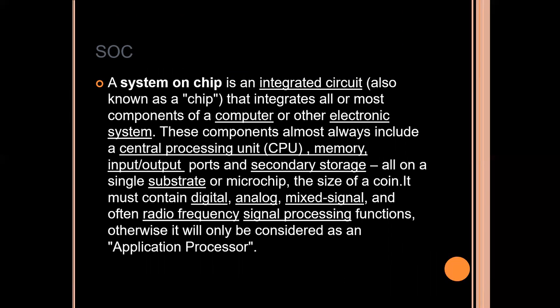Let's deep dive into the definition of SoC. A system on a chip is an integrated circuit, also known as a chip, that integrates almost all components of a computer or other electronic devices. These components almost always include a central processing unit (CPU), memory, input and output ports, and secondary storage — all on a single substrate on a microchip the size of a coin. It must contain digital, analog, mixed signal, and other radio frequency signal processing functions.